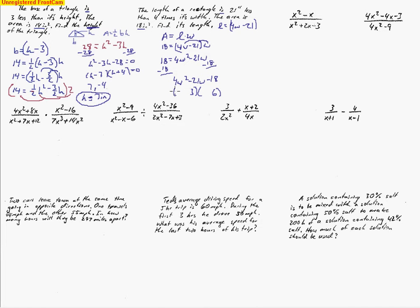I'll start with 6 and 3, which multiply to make 18. Fitting the 4 in, I try 4w and w — the outside terms make 24 and inside makes 3, which subtract to make 21. Making the 6 negative gives negative 21. Solving for w gives negative three-fourths and positive 6. Since we're talking about distance, we use 6. They want the length, so we substitute 6 in for w.